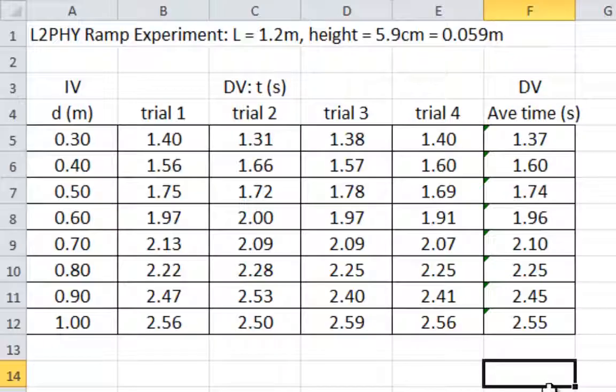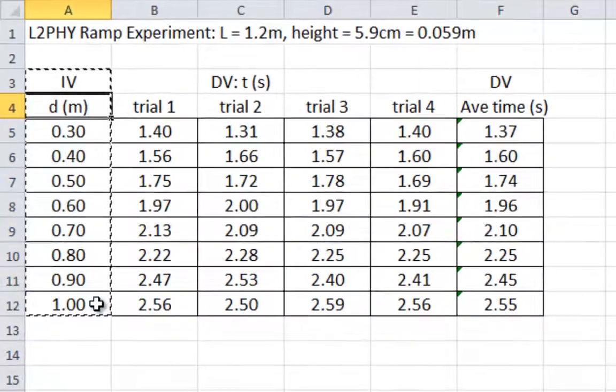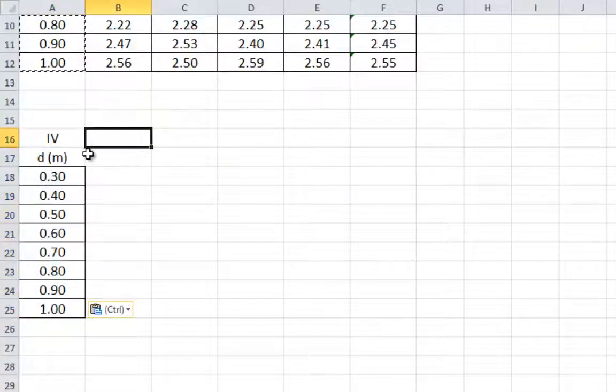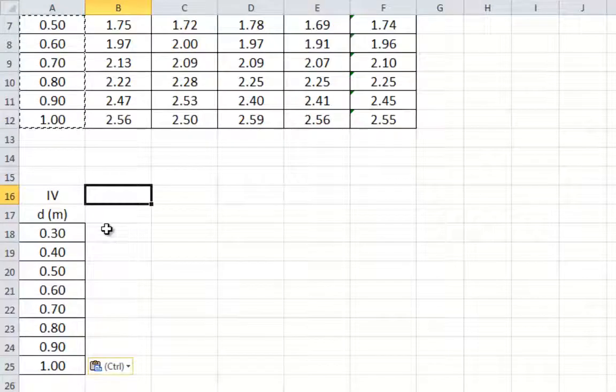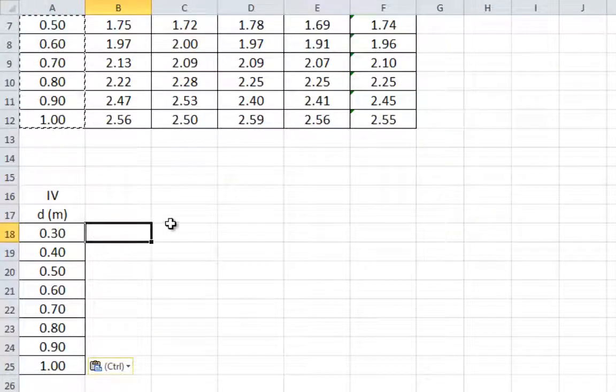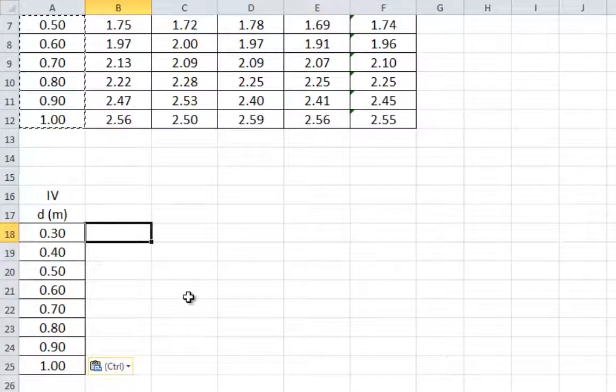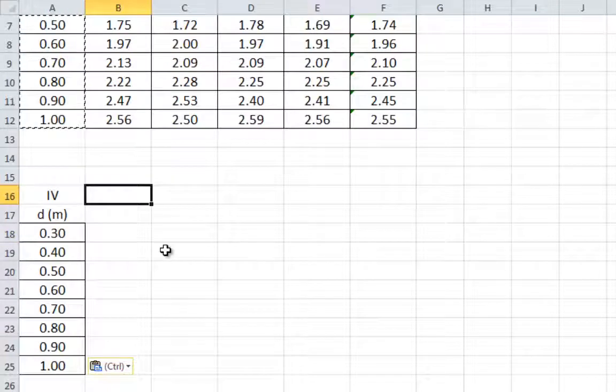Back to our Excel graph. All we need is to copy and paste that data so we have the same distances. Now, next to it, what I'm going to do is square each of these time values. Again, you can do this by hand or you can do it in Excel.